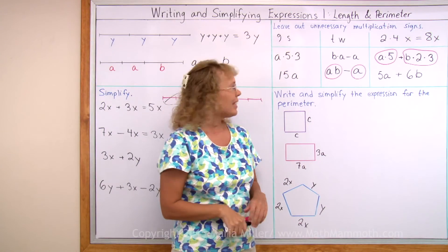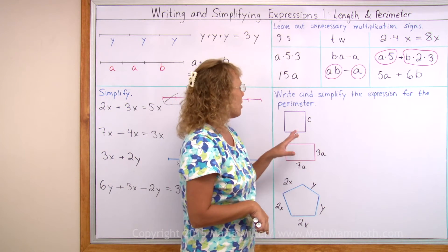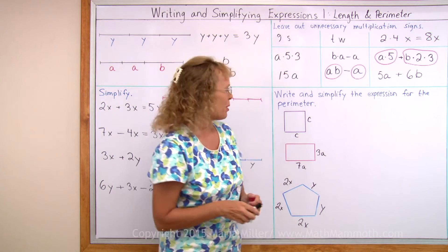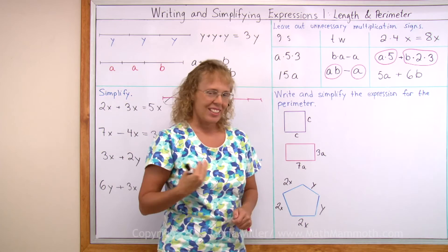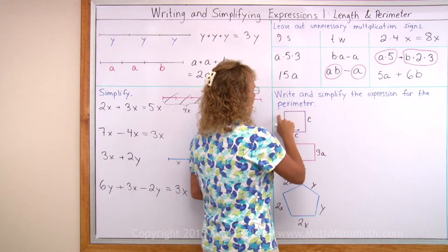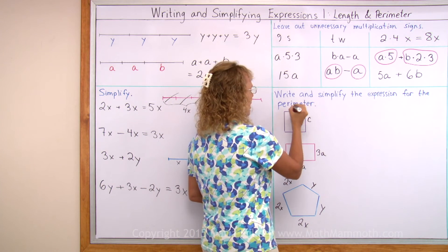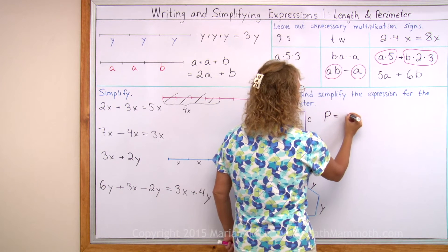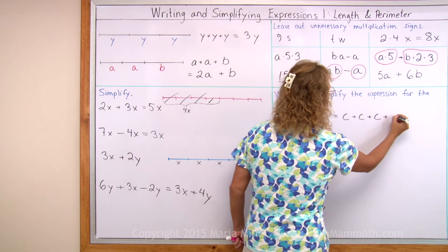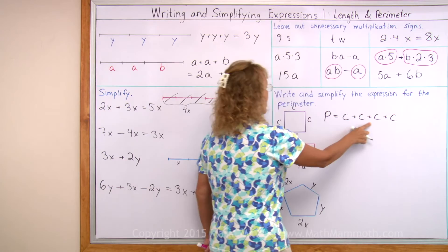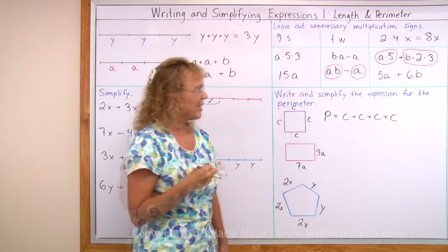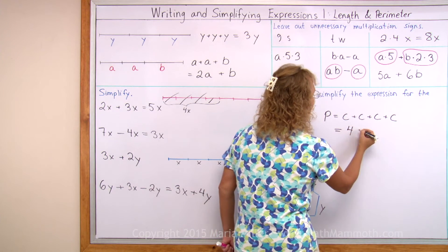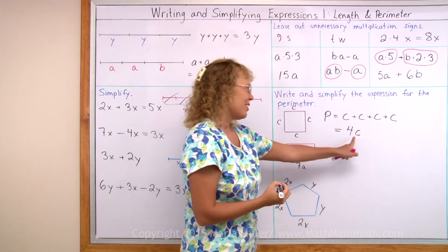Lastly, we are going to write and simplify the expression for the perimeter of these figures. Perimeter — you go all the way around and add the side lengths. Going all the way around here, there is a side length of c on each side because this is a square. So we add and get: perimeter equals c plus c plus c plus c. But there is a simpler way — repeated addition can be written using multiplication: 4 times c, or 4c, with no multiplication sign.